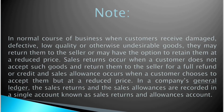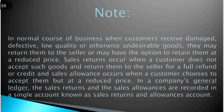In the normal course of business, when customers receive damaged, defective, low quality, or otherwise undesirable goods, they may return them to the seller or may have the option to retain them at a reduced price. Sales returns occur when a customer does not accept such goods and returns them to the seller for a full refund or credit. Sales allowances occur when a customer chooses to accept the goods but at a reduced price. In a company's general ledger, sales returns and sales allowances are recorded in a single account known as the sales returns and allowances account.